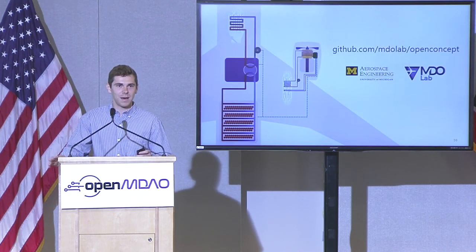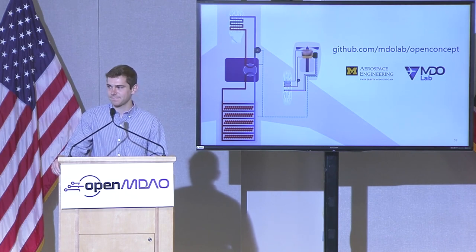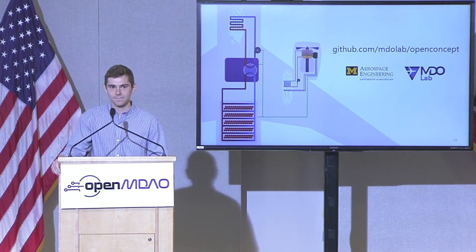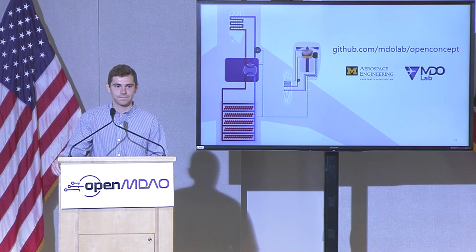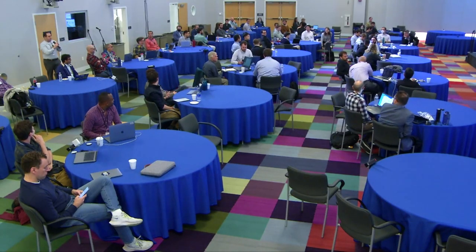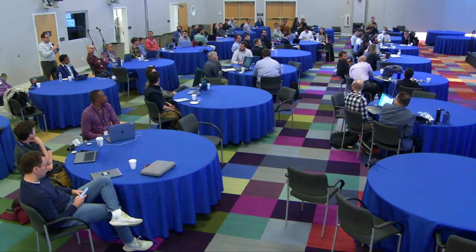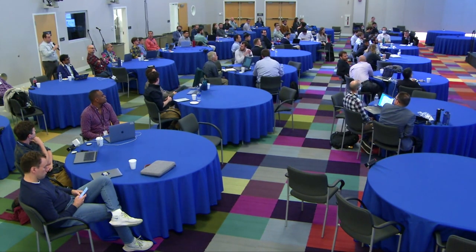With that, I'll close. I'm happy to take any questions. Thank you for listening. The first question: your online training strategy — you're differentiating through the training of the surrogate model. Do you think you could apply that to the propulsion as well, or is it not viable?